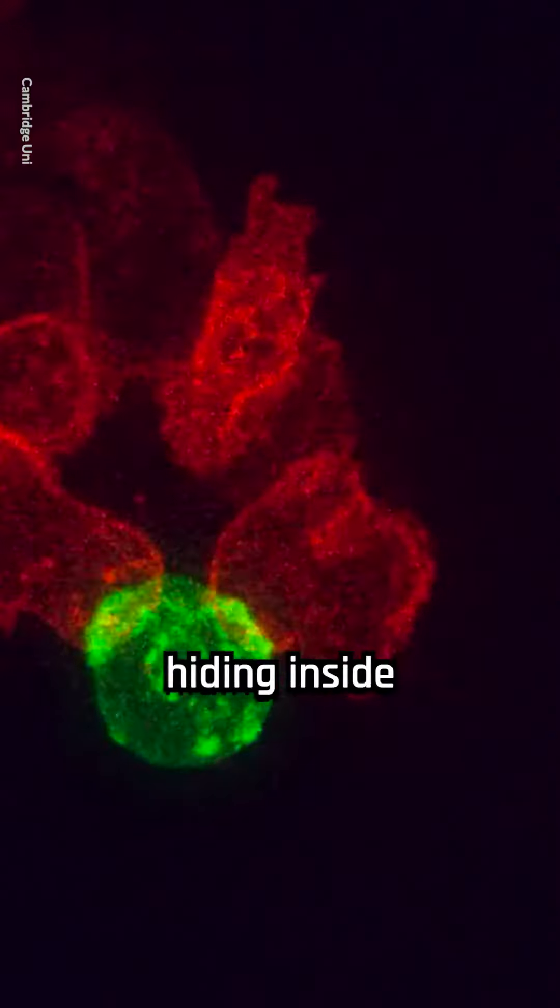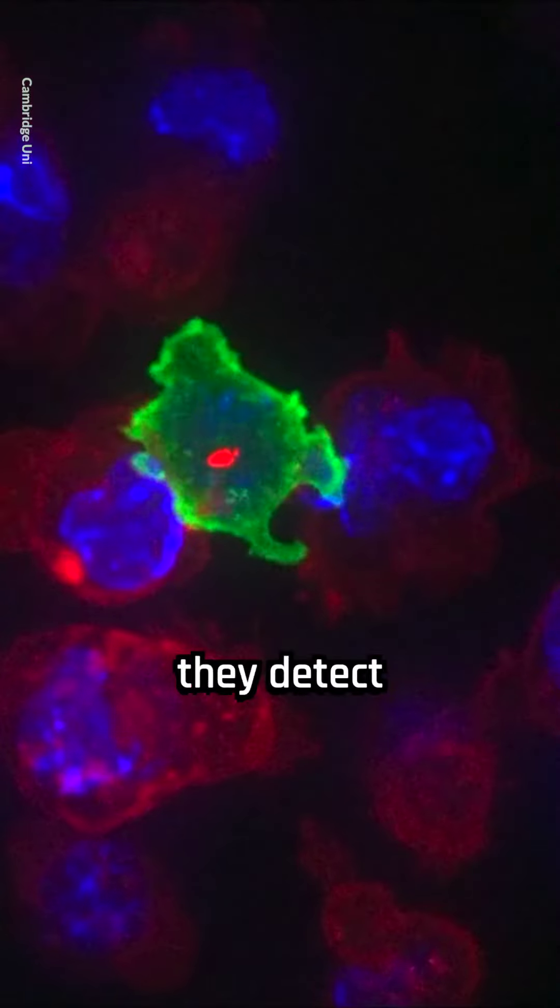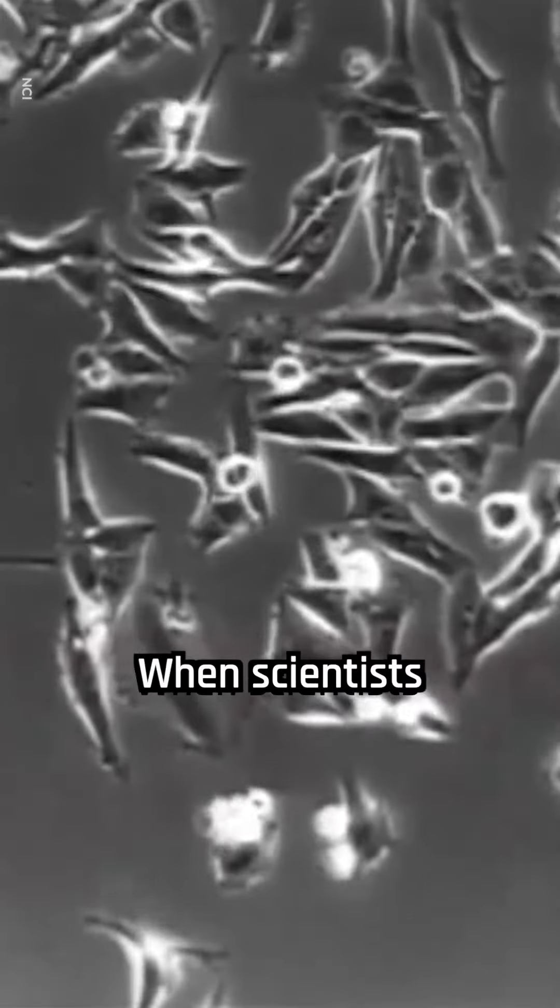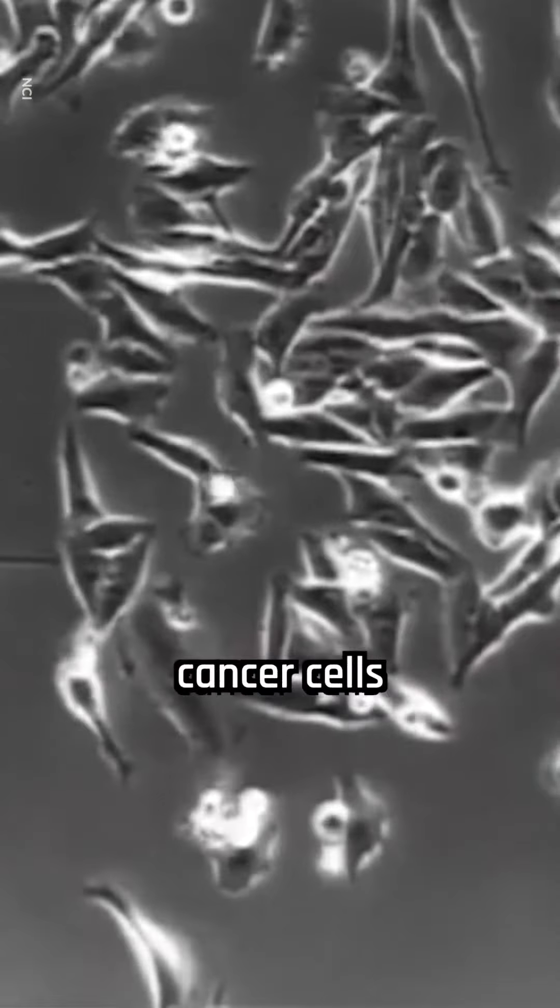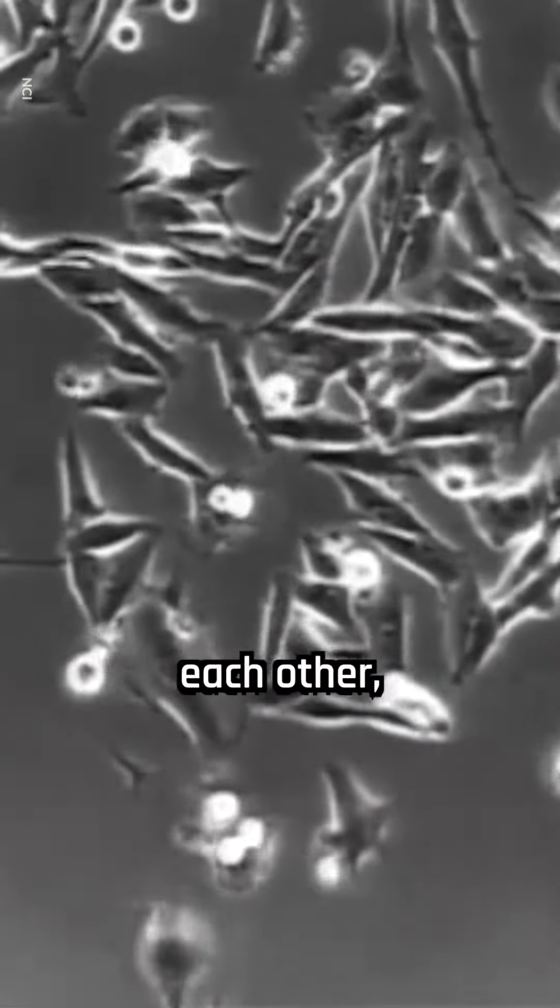Cancer cells begin hiding inside each other as soon as they detect certain signals released by killer T cells. When scientists blocked these signals, cancer cells stopped hiding inside each other,